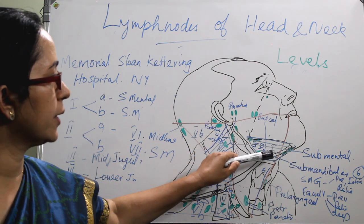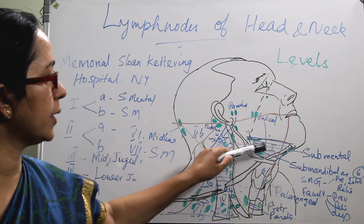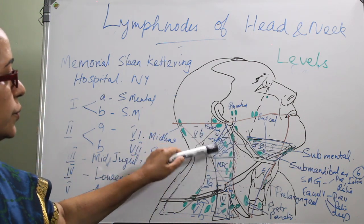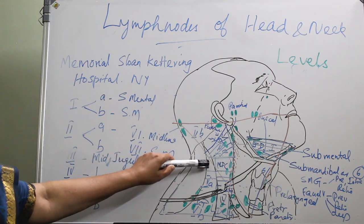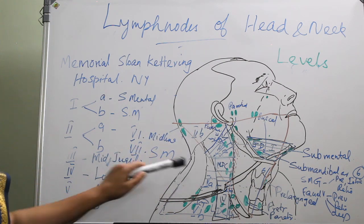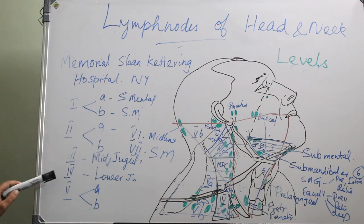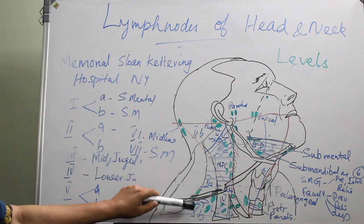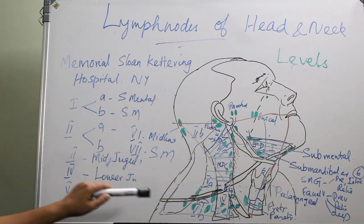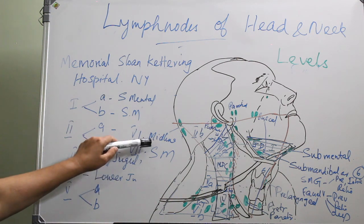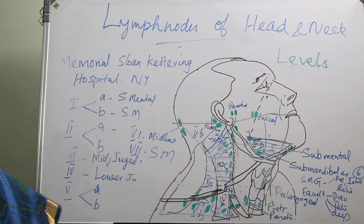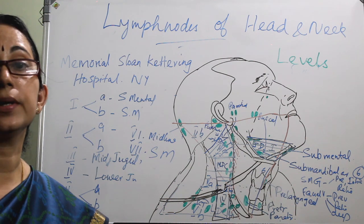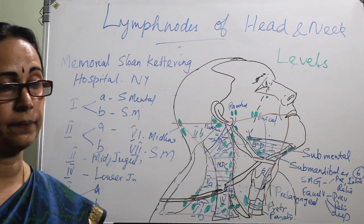To summarize the levels: Level 1 is divided into 1A and 1B. Level 2 is divided into 2A and 2B. Level 3 is the mid-jugular chain. Level 4 is the lower jugular chain. Level 5 is the posterior group, divided into 5A and 5B. Level 6 is the anterior midline. Level 7 is the superior mediastinal group.